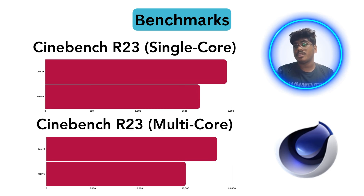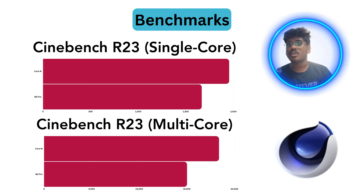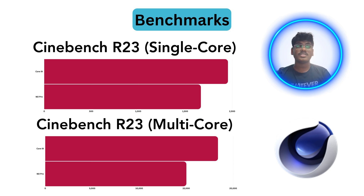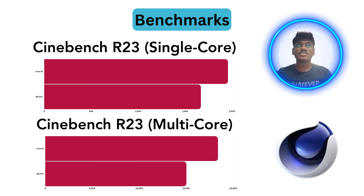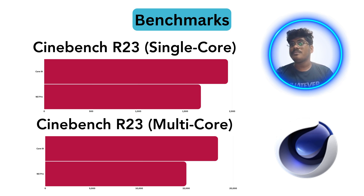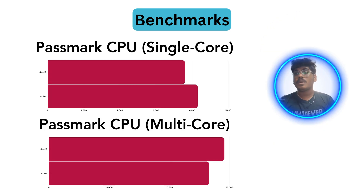Let's look at the Cinebench R23 benchmarks with single-core and multi-core tests. In single-core, Intel Core i9 scores 1955 out of 2000, while M2 Pro scores 1667 — so i9 has better single-core performance here. In multi-core, i9 scores 18,230 and M2 Pro scores 15,170. So in Cinebench R23, both single-core and multi-core, the Core i9 has better performance.